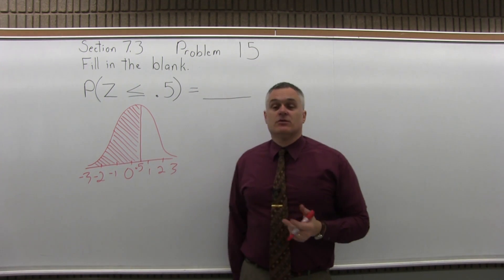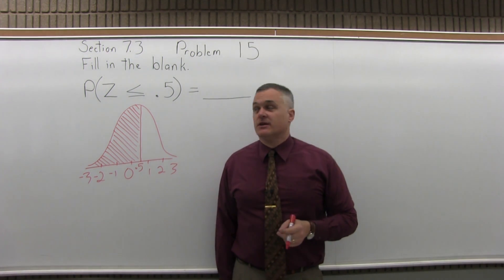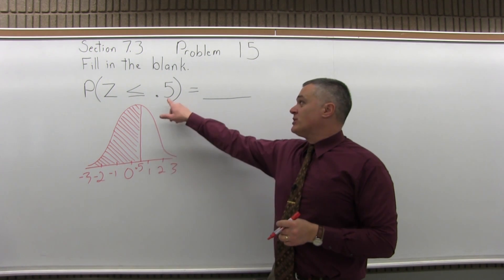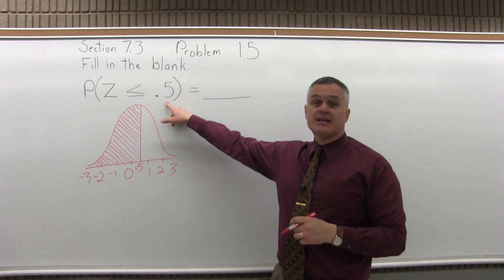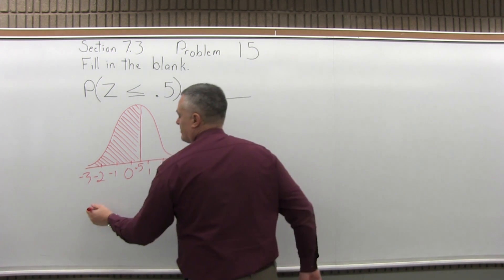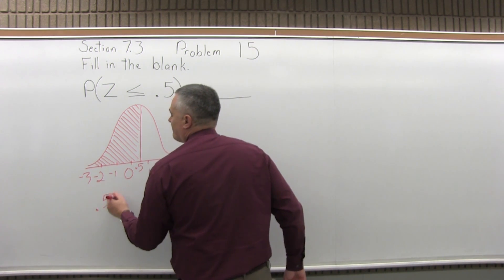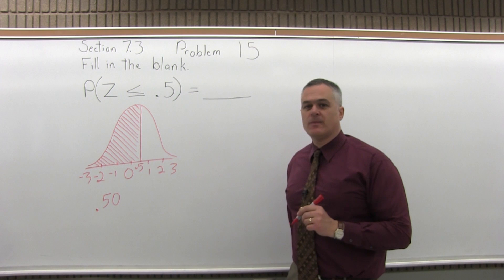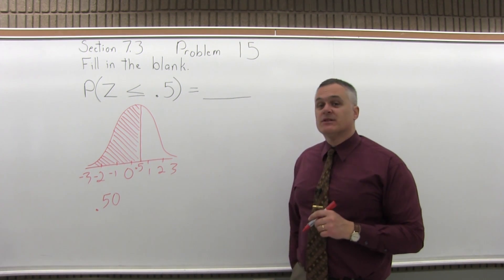So what we need to do is look up .5 in the chart. So step one to look it up is write the number to look up so that it has two places after the decimal. So the .5 will be written as .50. Now I have two places after the decimal.